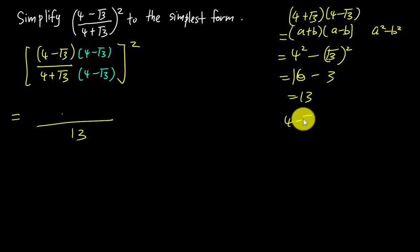The numerator is (4 - √3)². This is 16 minus 8√3 plus 3, which gives us 19 - 8√3.